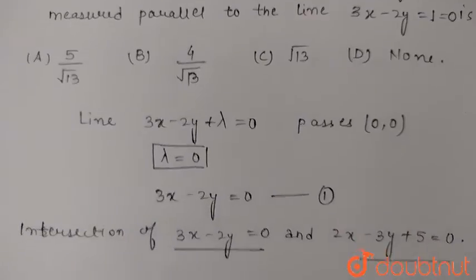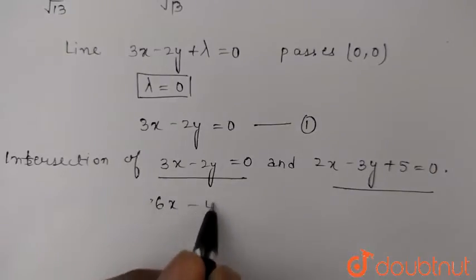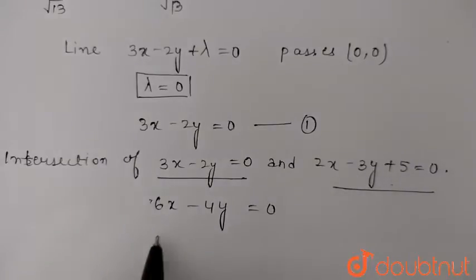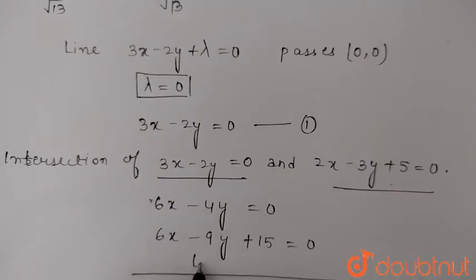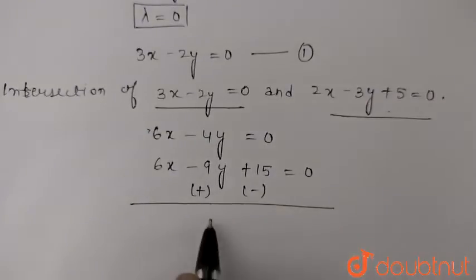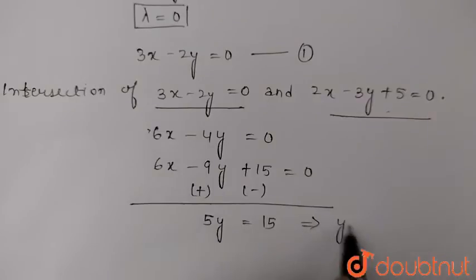We have to find the intersection point. Multiplying the first equation by 2, we get 6x minus 4y equal to 0. Multiplying the second by 3, we get 6x minus 9y plus 15 equal to 0. Finally, we get 5y equal to 15, so y equal to 3.